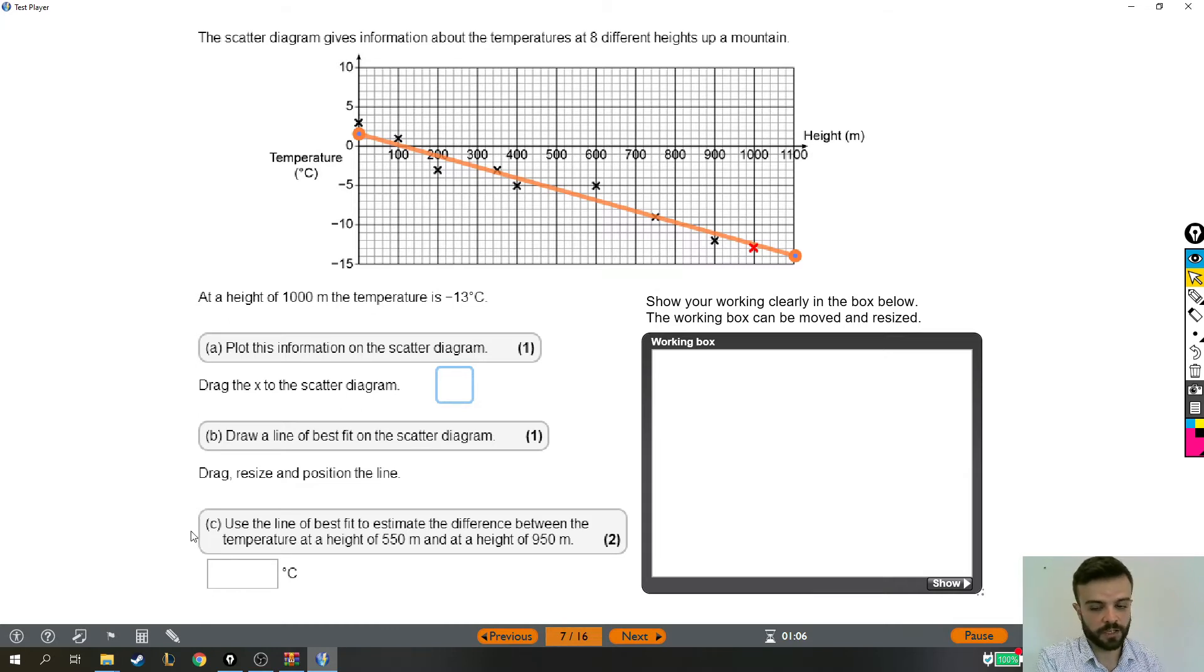Now, part C says use the line of best fit to estimate the difference between the temperature at a height of 550, so 550 which is here, and 950. So a little bit awkward because both of those heights are between squares, but that's okay.